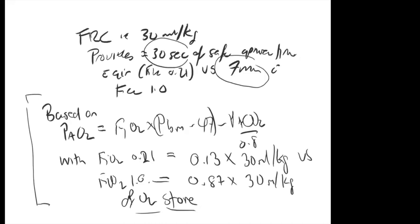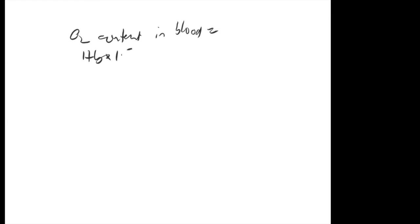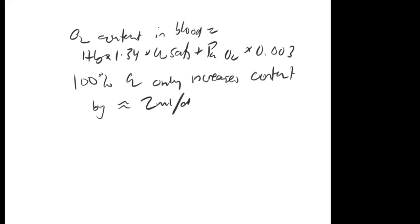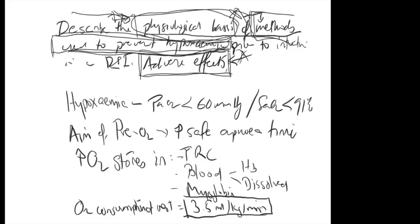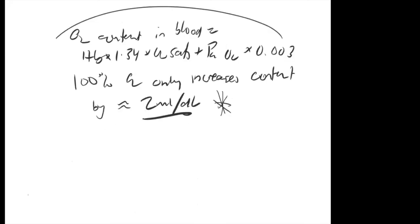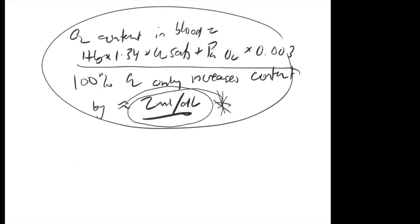We still have more to discuss: oxygen content in blood. The formula is Hb × 1.34 × SO2 plus PaO2 × 0.003 (using Henry's solubility coefficient). Running 100% oxygen only increases content by 2 mL/dL. Note: 0.003 represents mL/dL; if you see 0.03, it's mL/L. The bang for your buck is actually just with FRC. Covering definition, safe apnea time, stores, oxygen consumption, FRC difference, and blood content — that's about 5 marks, half the question.